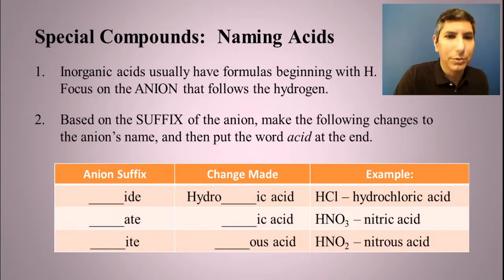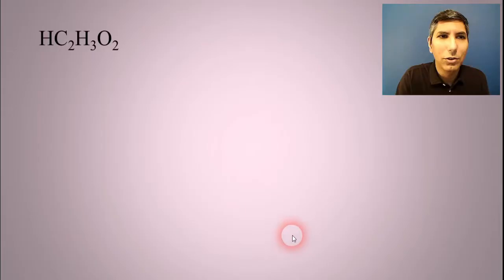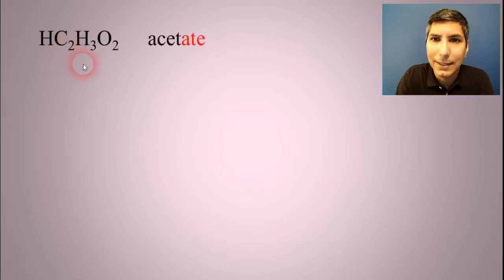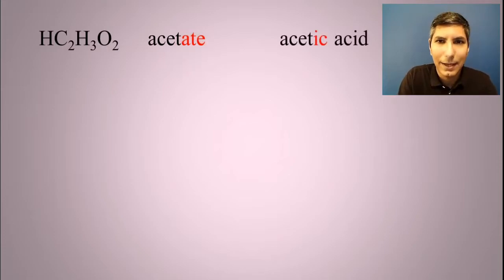Let's try a few examples here and see if we can figure out how to do these on our own. So here's a very common acid. Once again, we just ignore the H for right now and focus on the anion that C2H3O2 is called acetate. So that ate gets changed to ic. So it's acetic acid. We sometimes use that as the name for vinegar. Dilute acetic acid is often called vinegar.